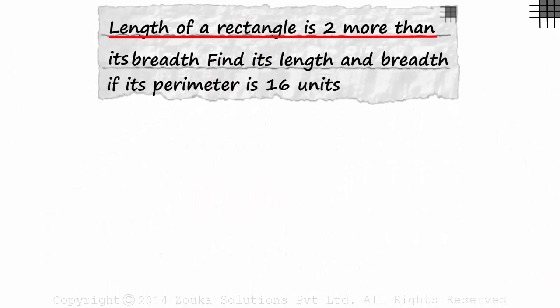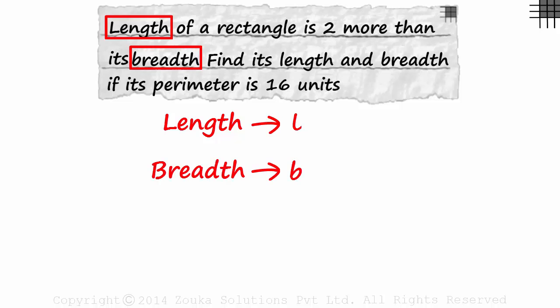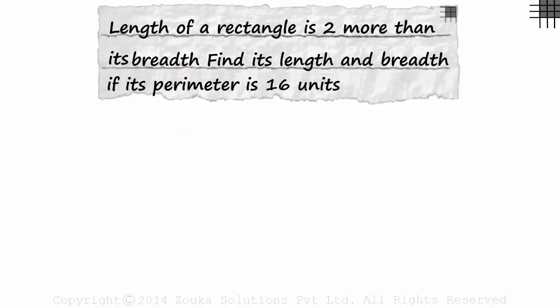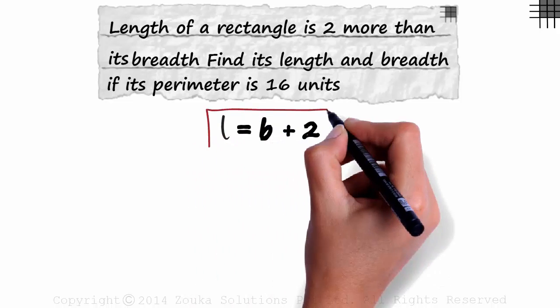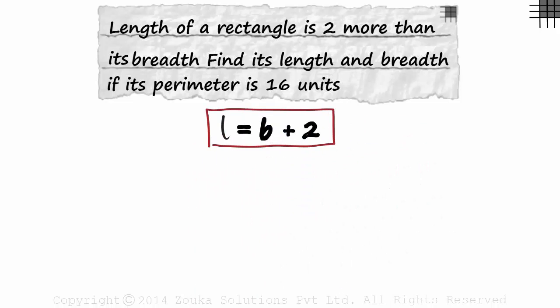The length of a rectangle is two more than its breadth. Find its length and breadth if its perimeter is 16 units. Let's name the length as L and the breadth as B. The length is two more than its breadth. This was the most important relationship in this problem.